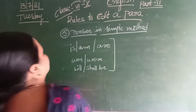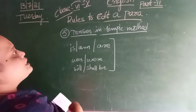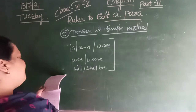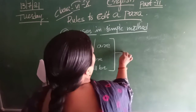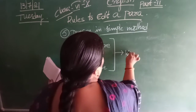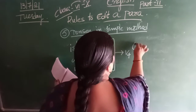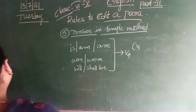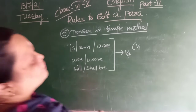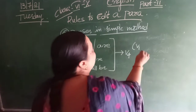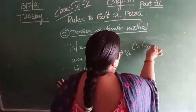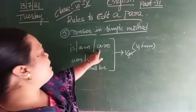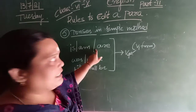These are the tenses. When we are using these in sentences, what we have to do is we should use them in V4 form. In any sentence, V1 form is used normally. We are going to convert that V1 form into V4. Is, am, are — we will be using these in present tense.